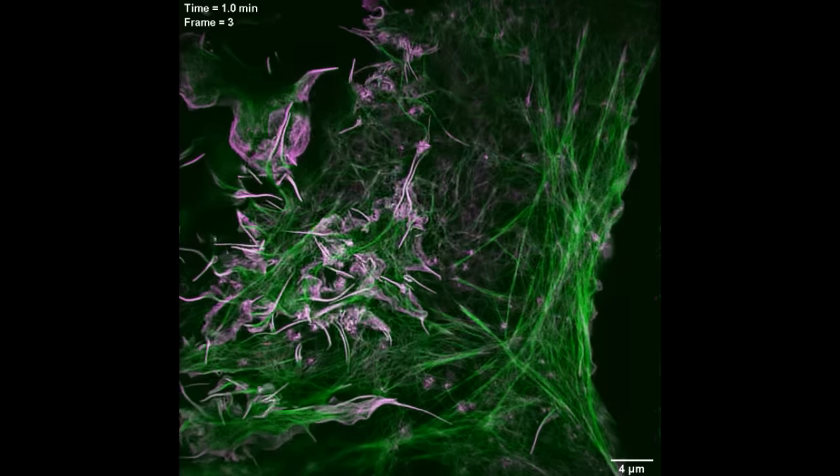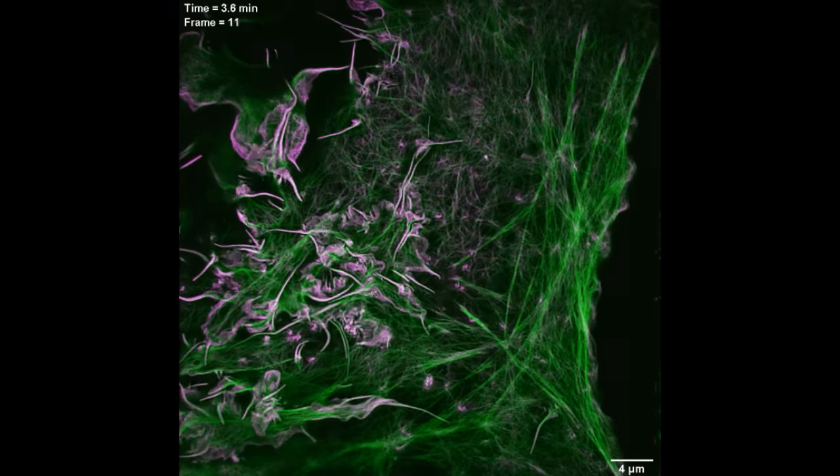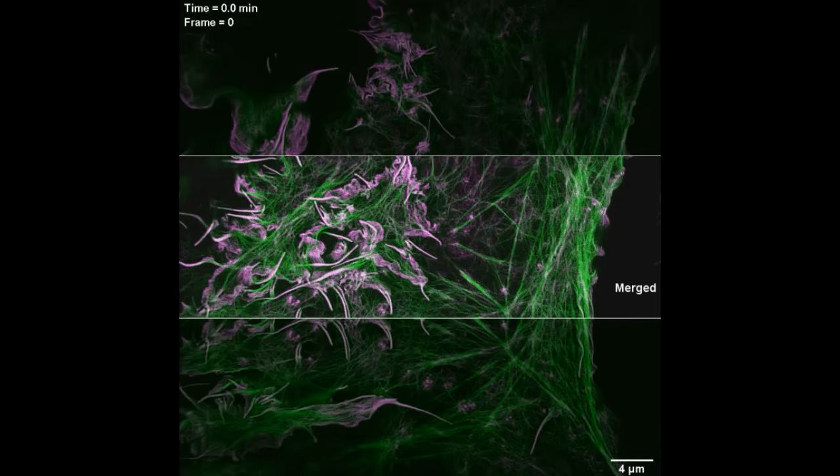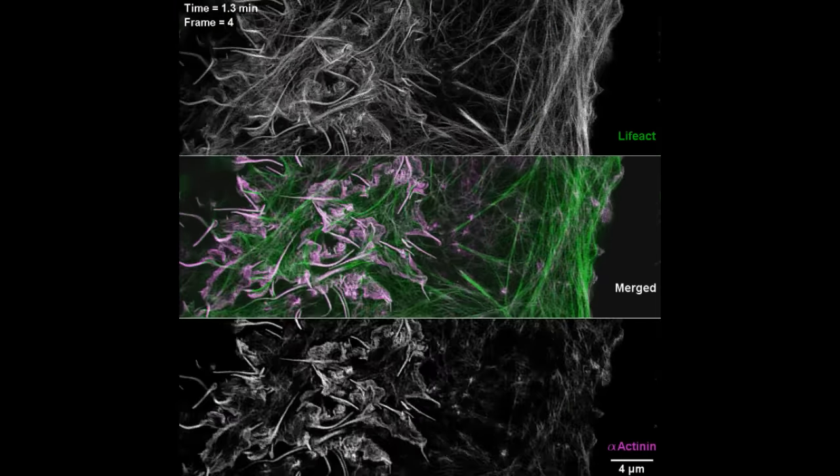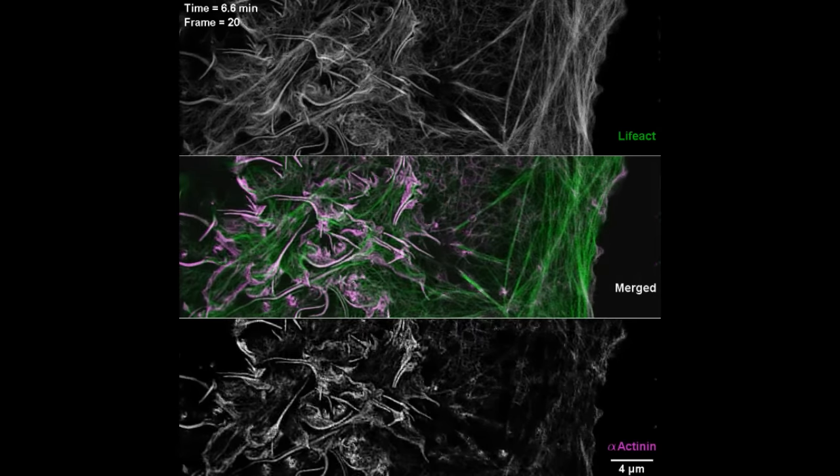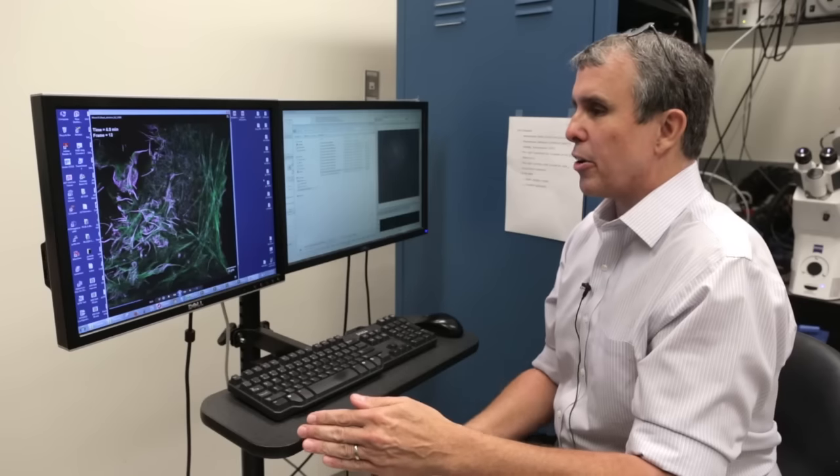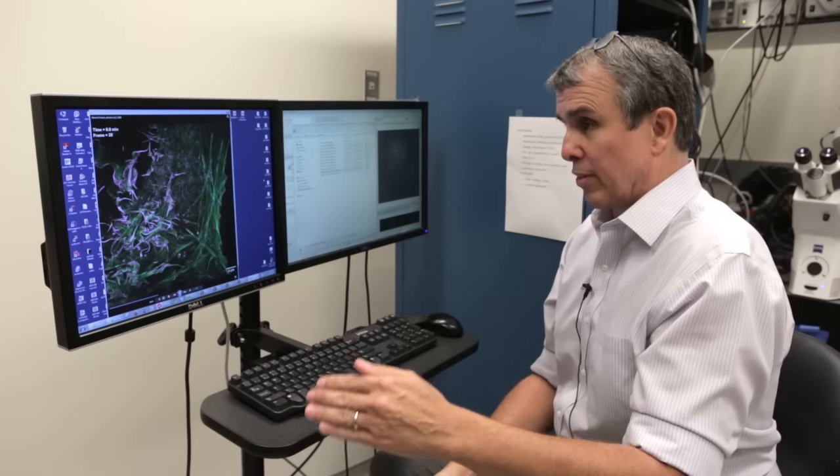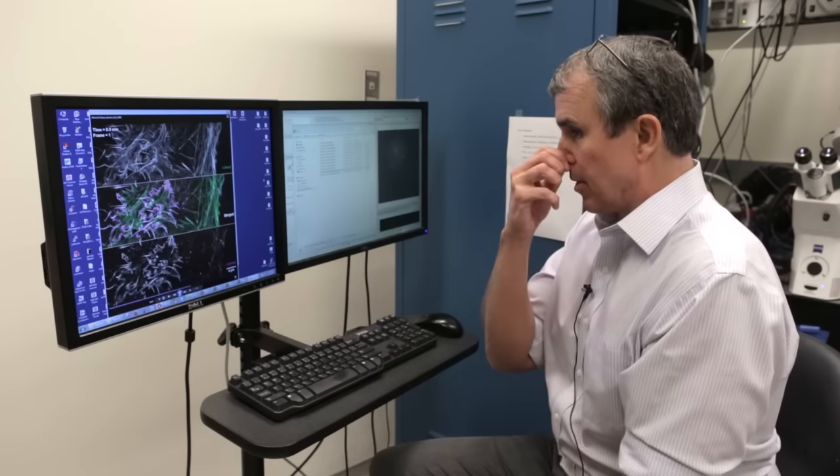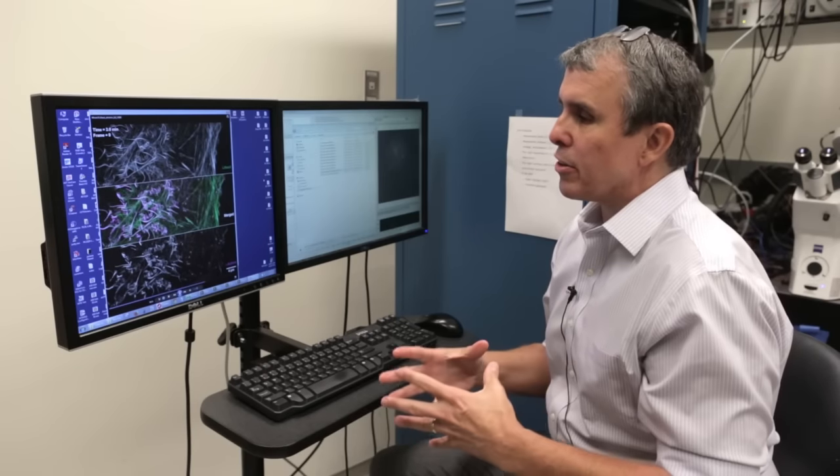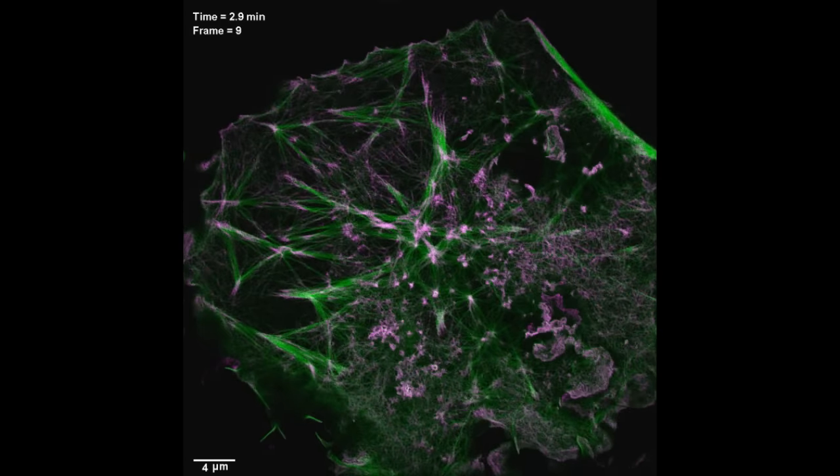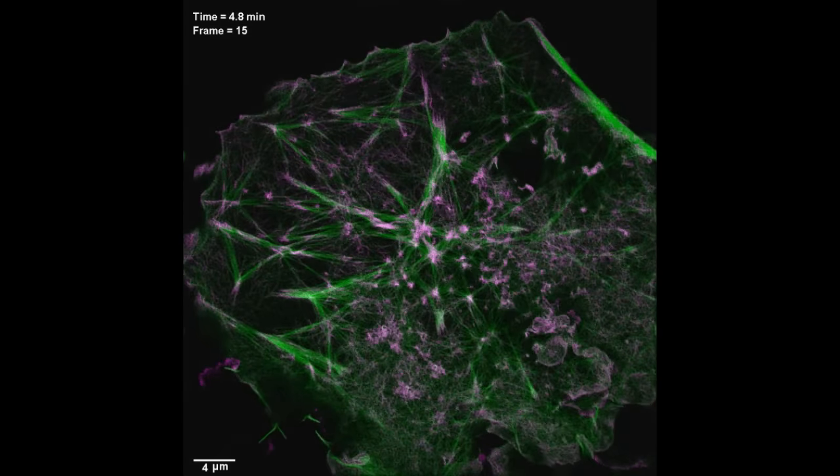In this movie, we're using the second form of high-resolution SIM that we developed, which involves using a non-linearity in a fluorescent protein to extend the resolution even further than in the high-numerical aperture case. 100 nanometers was the old resolution in SIM, and now we can push that to 62 nanometers. So now we can understand the dynamics of the cytoskeleton of the cell in much greater detail than ever before.